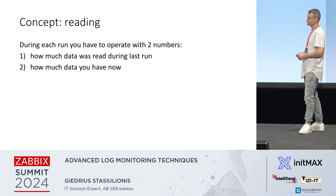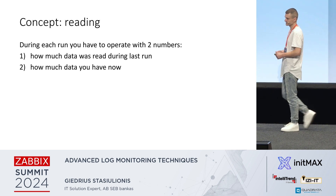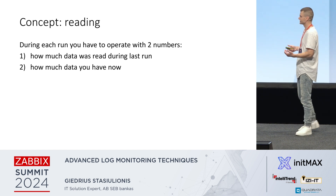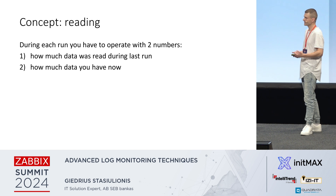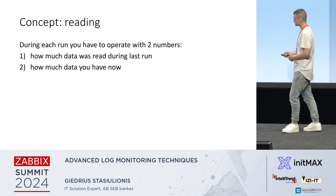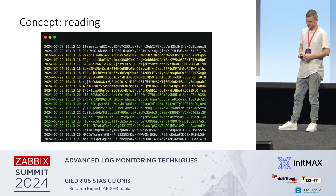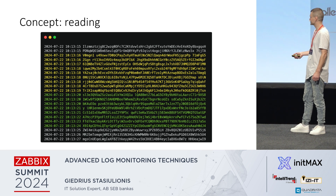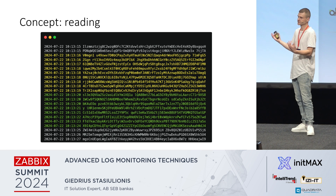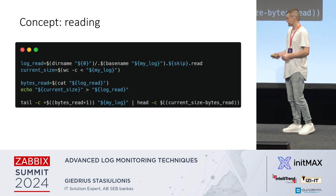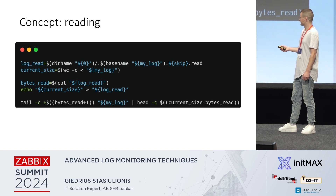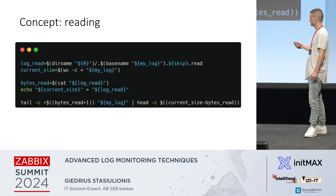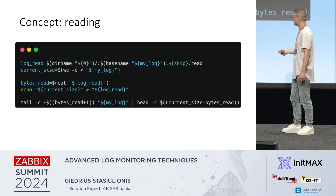Reading the log file portion by portion: we constantly operate with two numbers during each run — how much data did we have before, and how much data do we have now. We only need to store one number: how much data we have now. The second number always replaces the first, and it never ends. Running this log analysis every five seconds, I read the yellow portion, then the green portion — constantly reading only the relevant, fresh data. We check the current size, check the size from the last run, override with the previous value, and slice the portion we want.